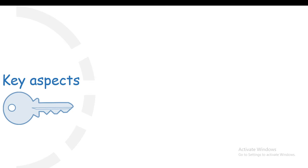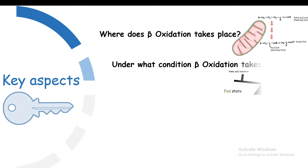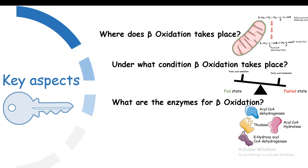Looking at beta oxidation of fatty acids, we have to consider a few aspects: where does beta oxidation take place, under what conditions does beta oxidation take place, what are the enzymes that help in the beta oxidation process — since any biochemical pathway is enzyme-driven — and lastly, how the beta oxidation process is regulated depending upon the demand.